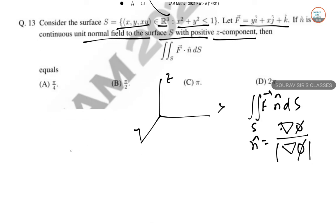Now Z equal to X Y. Let phi equal to Z minus X Y. Del phi equals minus Y I minus X J plus K.